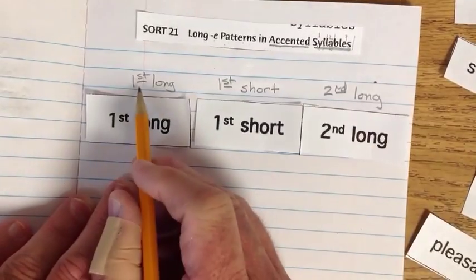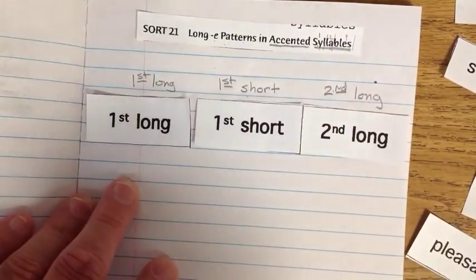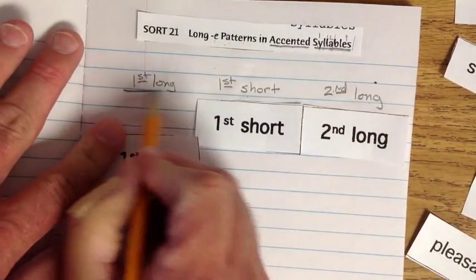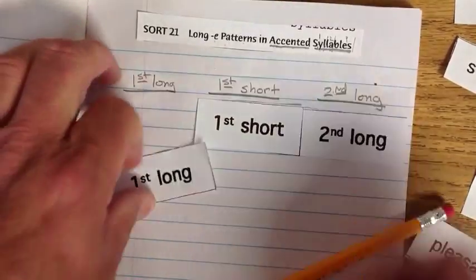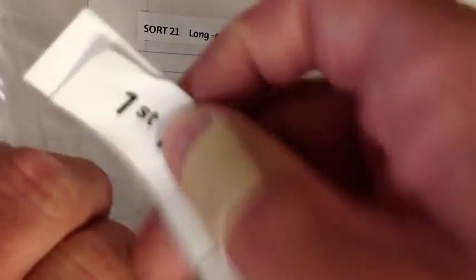First, short, and second, long. And you're saying first what? First what? Second what? I'm going to show you in just a minute. Okay? Take those, underline them, and put these in your zip-top bag at this time.